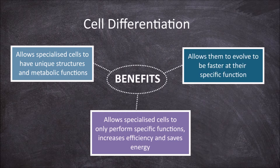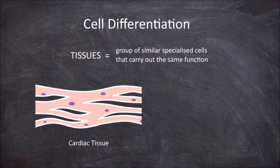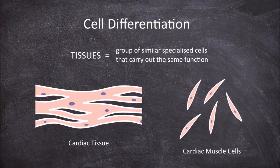It also allows them to evolve to be faster at their specific function as they have fewer things to do. Tissues are groups of similar specialised cells that carry out the same function. As they are made of multiple cells, they are only found in multicellular organisms. An example would be cardiac tissue, which is formed from multiple cardiac muscle cells that work together to contract and pump the heart.